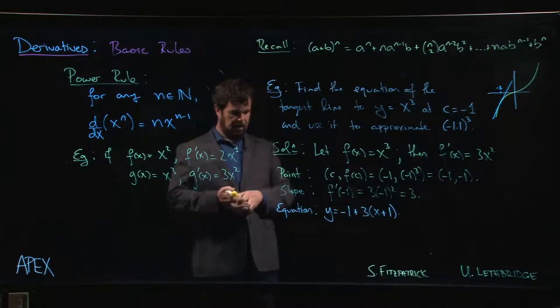That means we can approximate (-1.1) cubed, which is f(-1.1), using the tangent line. We can call this maybe l(x), this is the linear approximation. This is approximately l(-1.1) which is -1 plus 3 times (-1.1 + 1).